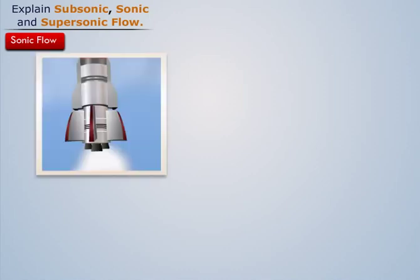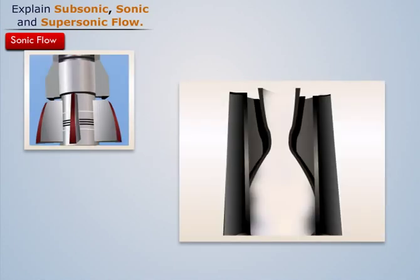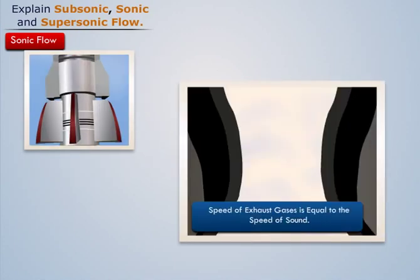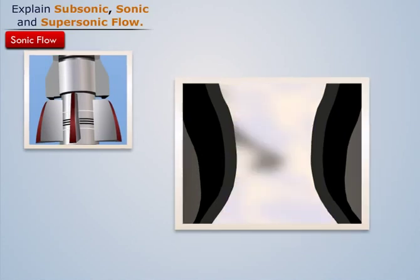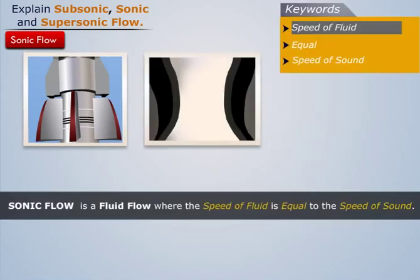Now let's understand sonic flow. Consider the same example — when the exhaust gases flow through the throat, their speed increases and becomes equal to the speed of sound. This flow of exhaust gases through the throat is said to be sonic. Thus, sonic flow is a fluid flow where the speed of the fluid is equal to the speed of sound.